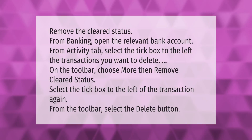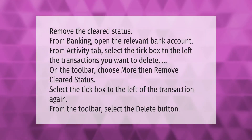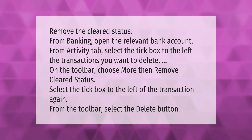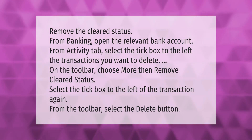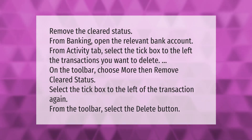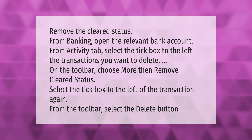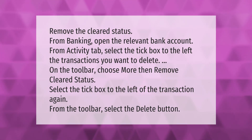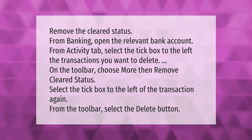To remove the cleared status from banking, open the relevant bank account from the activity tab. Select the tick box to the left of the transactions you want to delete. On the toolbar, choose more, then remove the cleared status. Select the tick box to the left of the transaction again, then from the toolbar select the delete button.